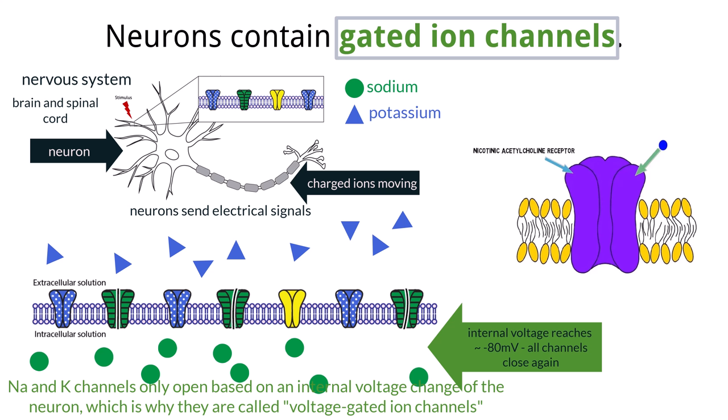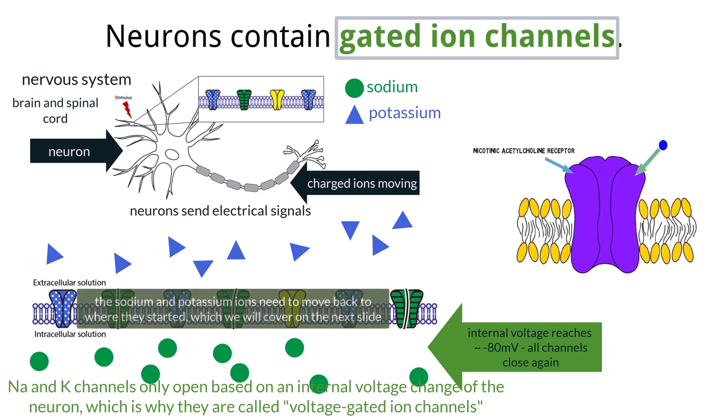At this point, the neuron has sent the electrical signal down the cell, which was the movement of those sodium ions. Eventually, these sodium and potassium ions will get back to where they started to be ready to send another signal, which we will discuss more on the next slide.